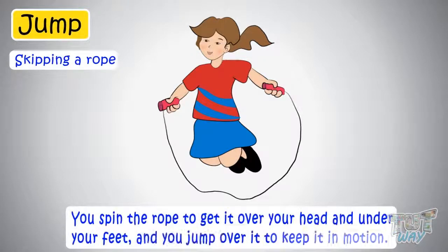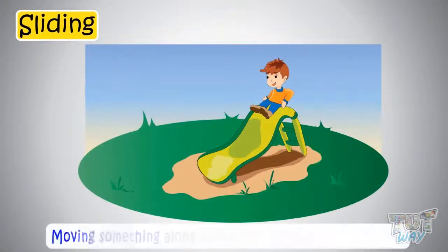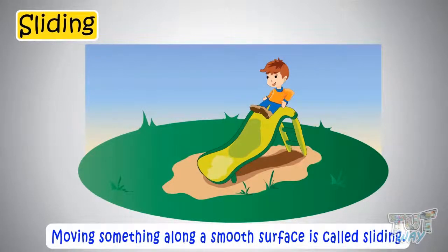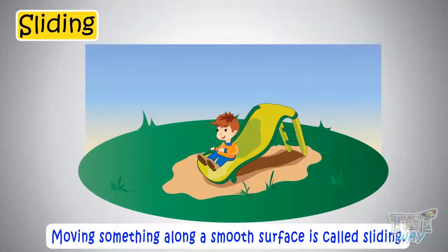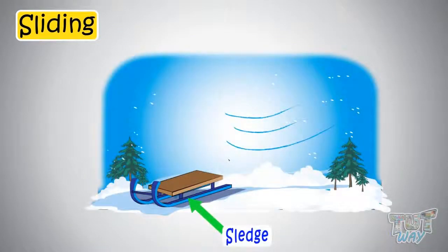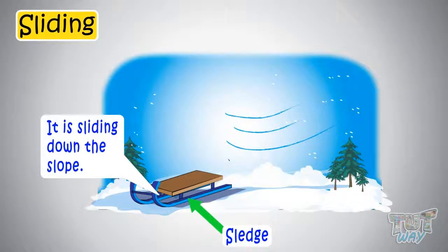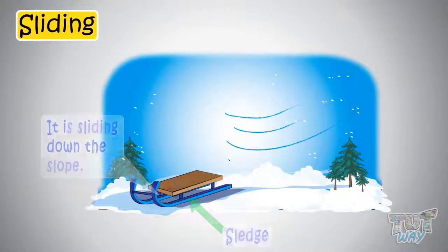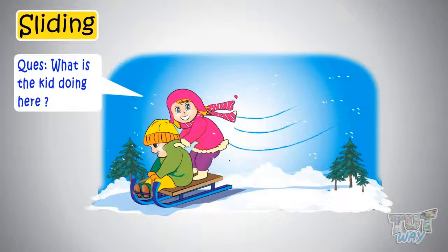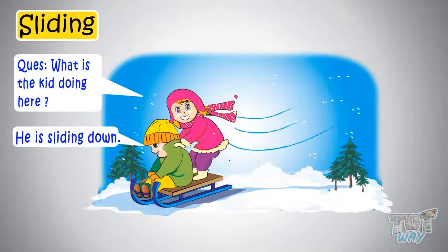You spin the rope to get it over your head and under your feet, and you jump over it to keep it in motion. Here is another movement — it is sliding. Moving something along a smooth surface is called sliding. Here the child is sliding down the ride. What is the movement of this sledge? It is sliding down the slope. Here the kid is also sliding down the slope.